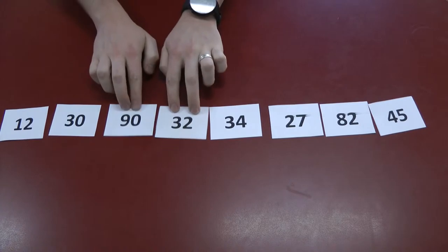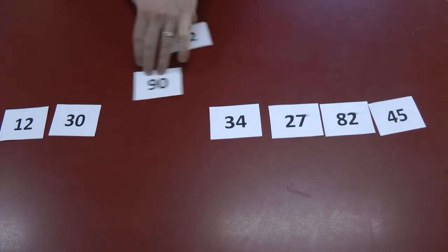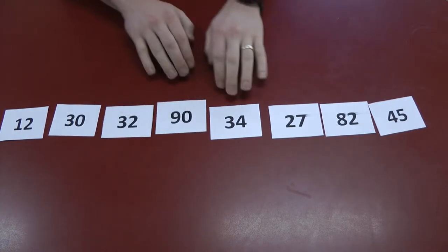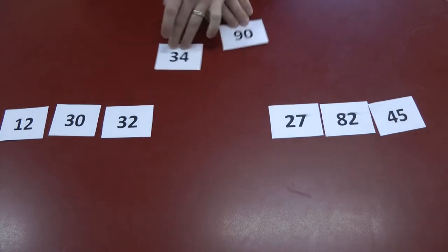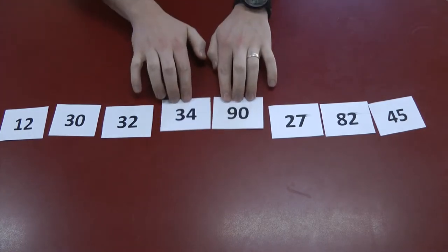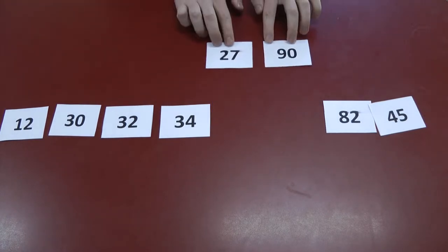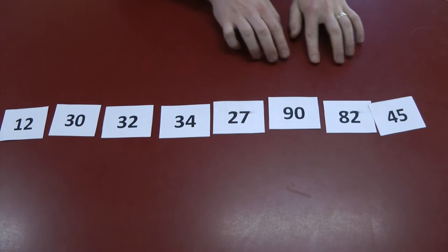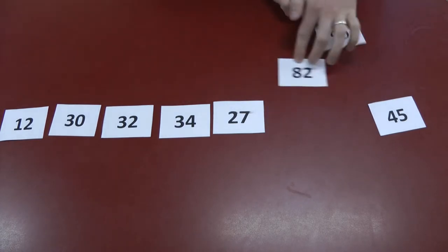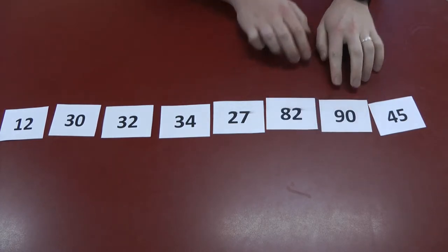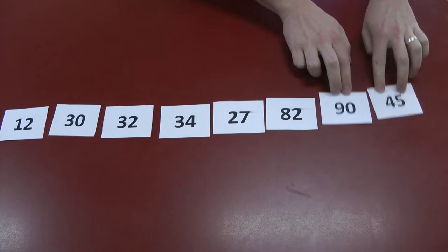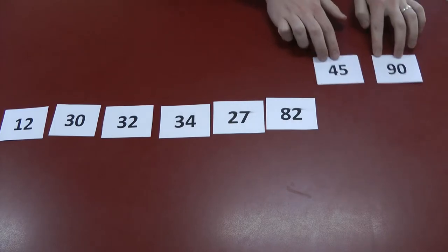And we just move our way through the list, comparing two numbers at a time. Once we hit the end of the list, this is called the end of the first pass.